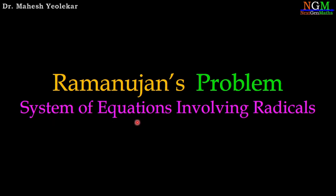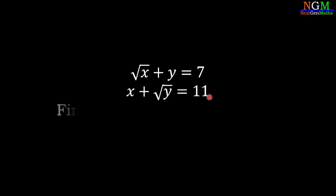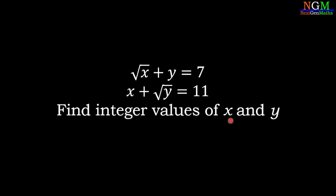We will try to solve the system of equations which involves radicals. The problem is: root x plus y equals 7, x plus root y equals 11. Find the integer values of x and y which satisfy both equations.